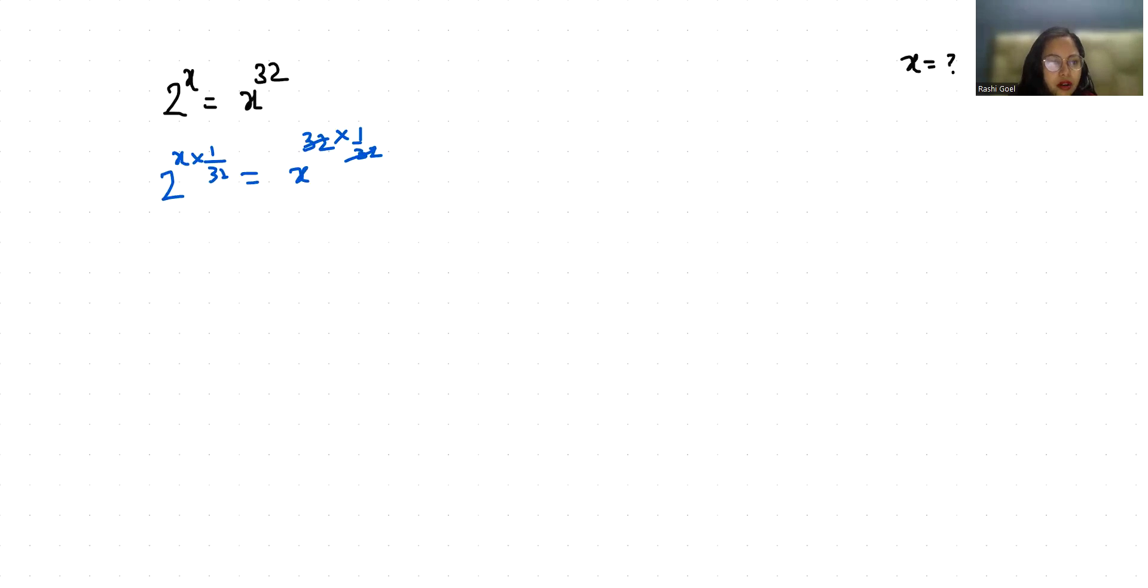So 2 power x by 32 equals x. Now I am going to multiply with power 1 by x both sides.